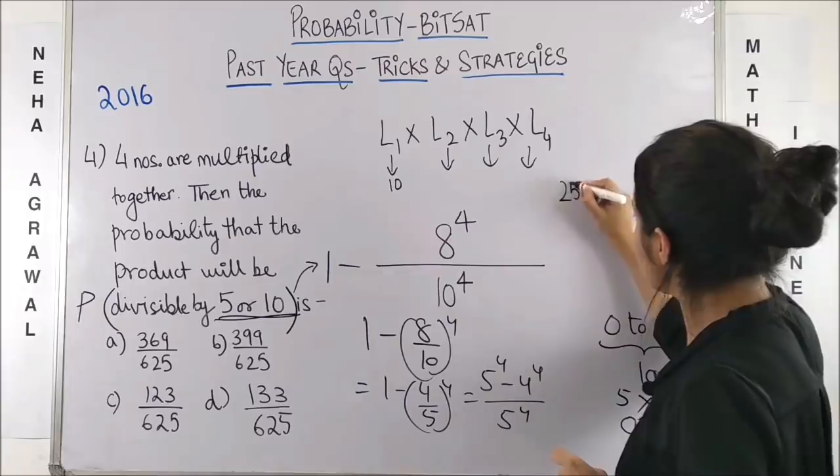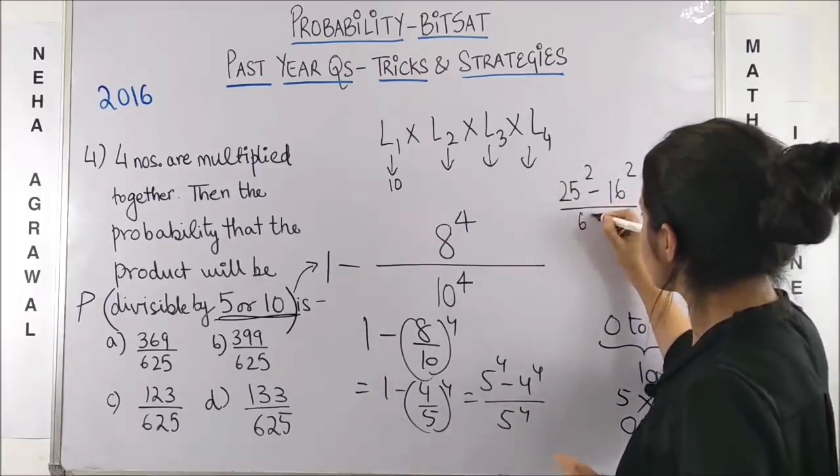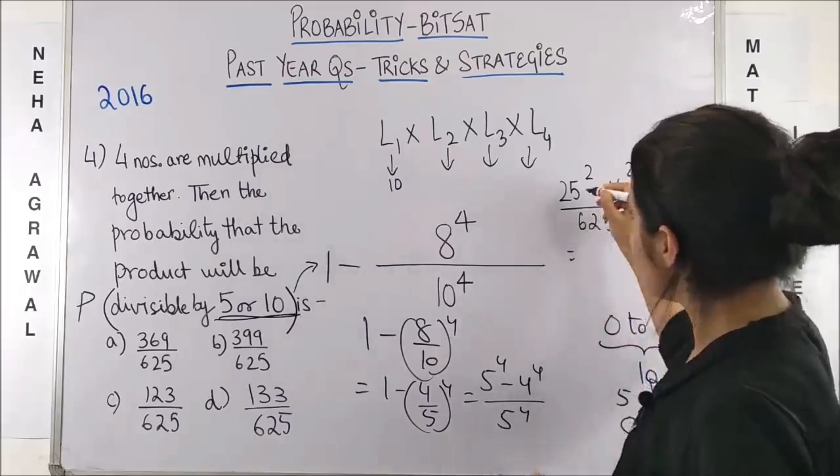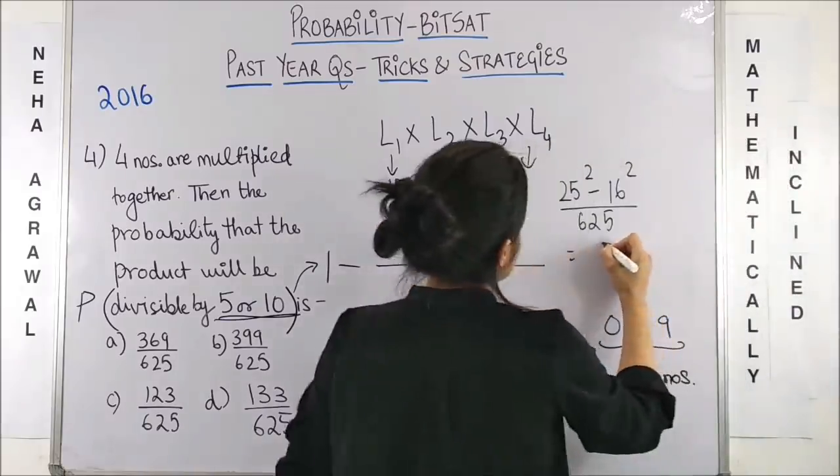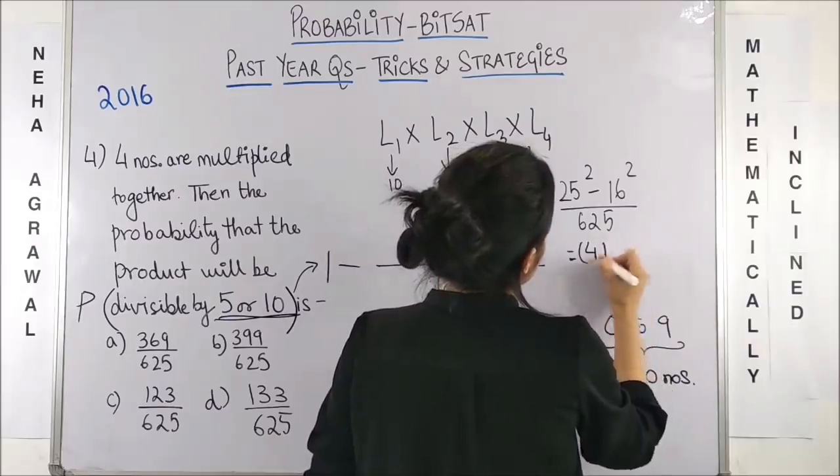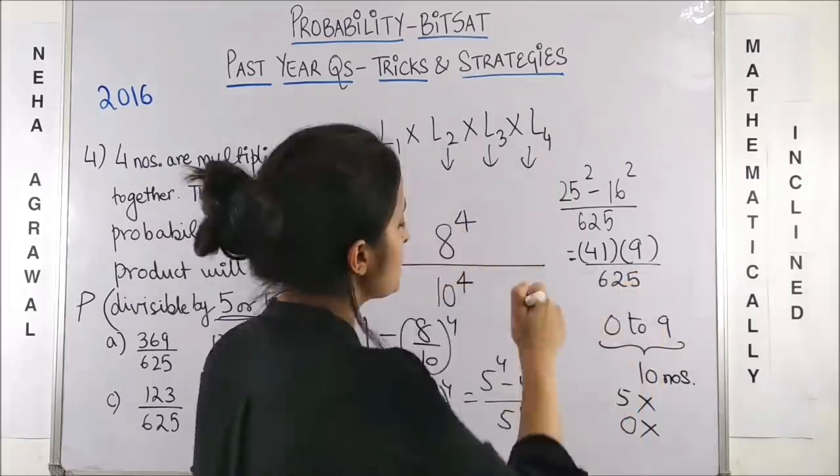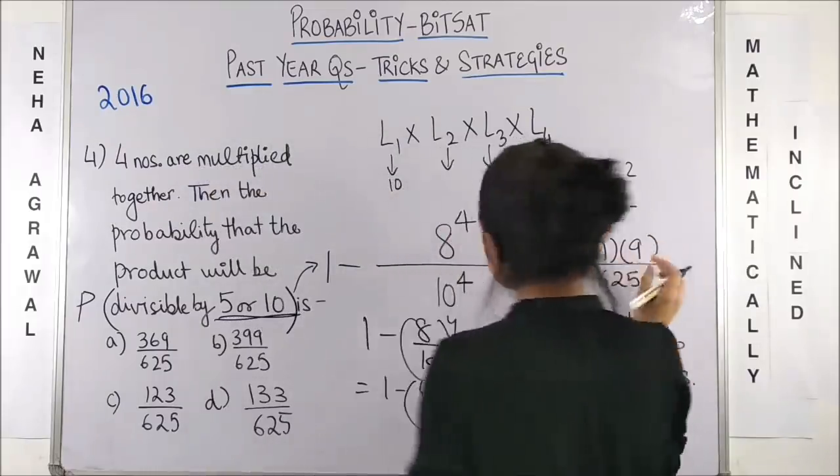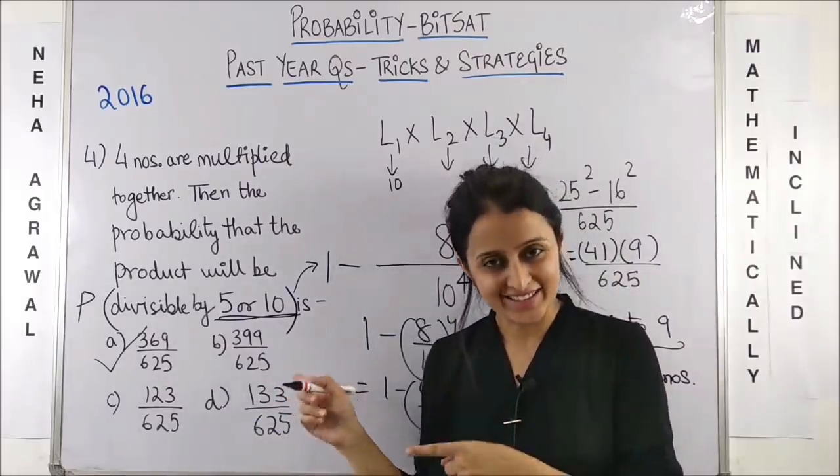That's it. You just have to figure out this. So, this will be 1 minus 4 by 5 raised to power 4, which is 5 raised to power 4 minus 4 raised to power 4 upon 5 raised to power 4. Now, here, this is the same as saying 25 square minus 16 square upon 625, which on solving, I can do 25 plus 16, that makes it 41. And 25 minus 16, that makes it 9. So, on simplifying, I get 369 by 625 and bingo! Here's your answer.